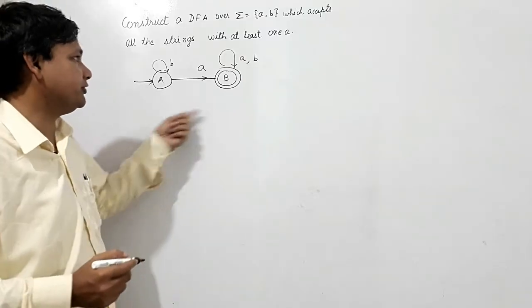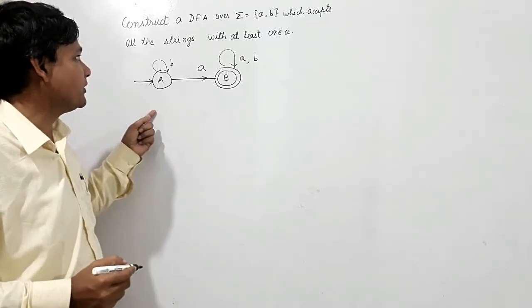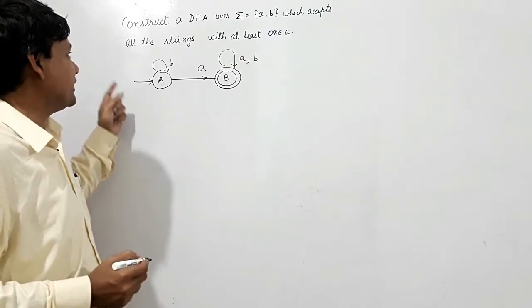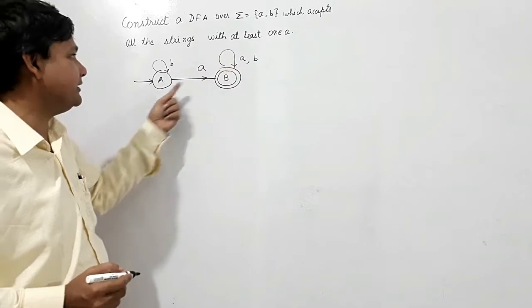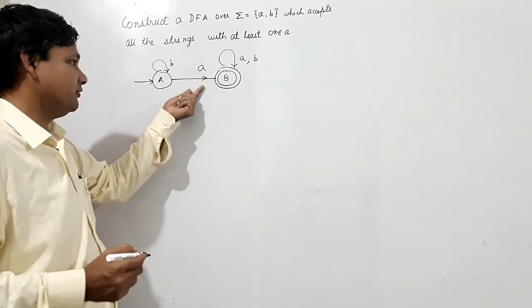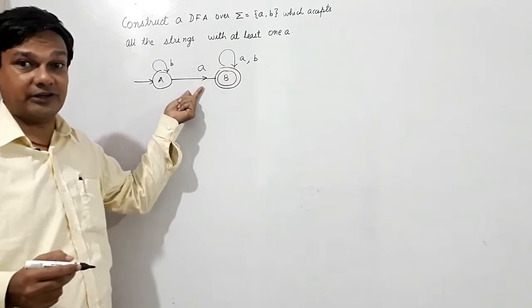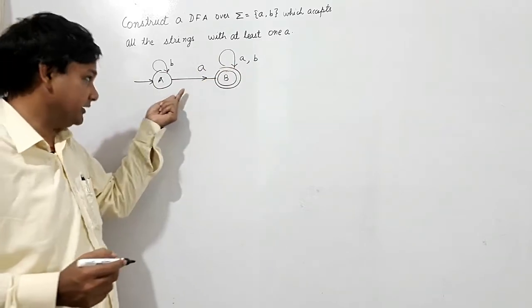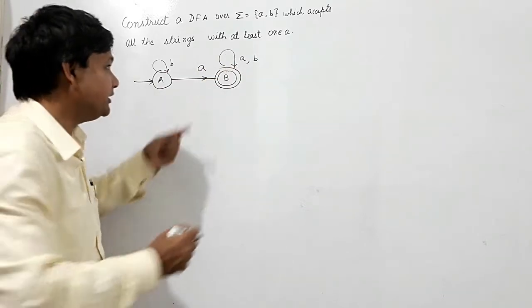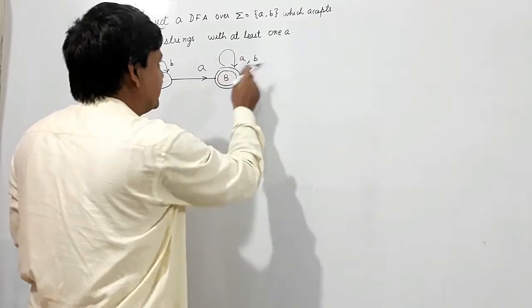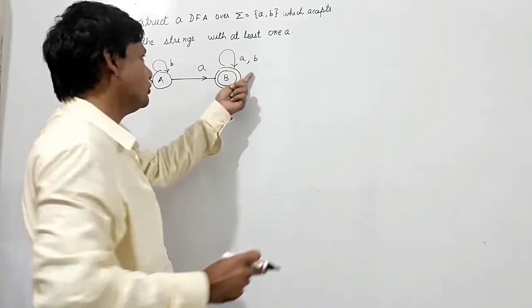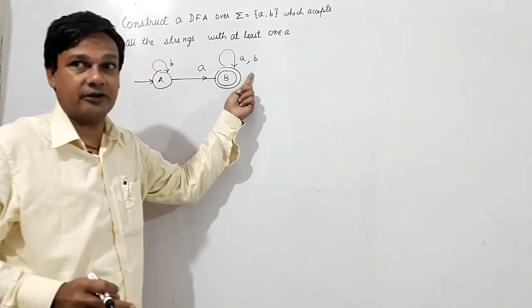So this is the finite automata which accepts all strings where at least one A is present. One A should be there, and if you get more than one A it should also be accepted.